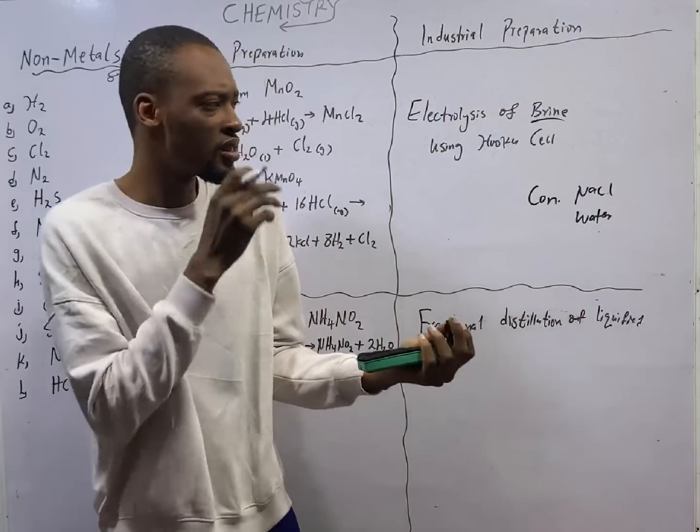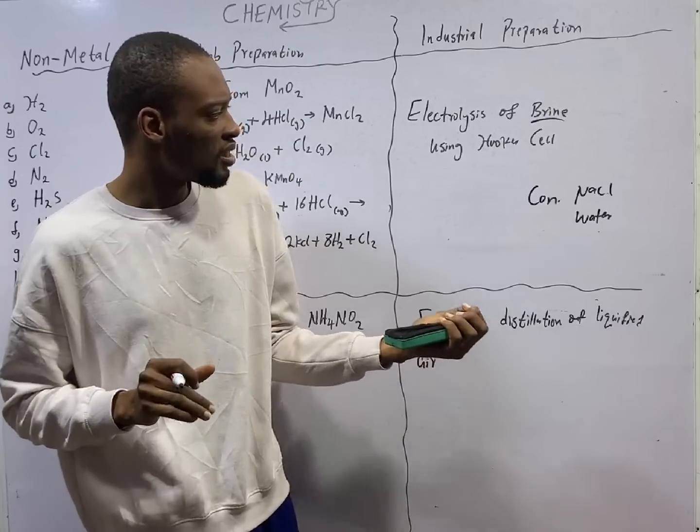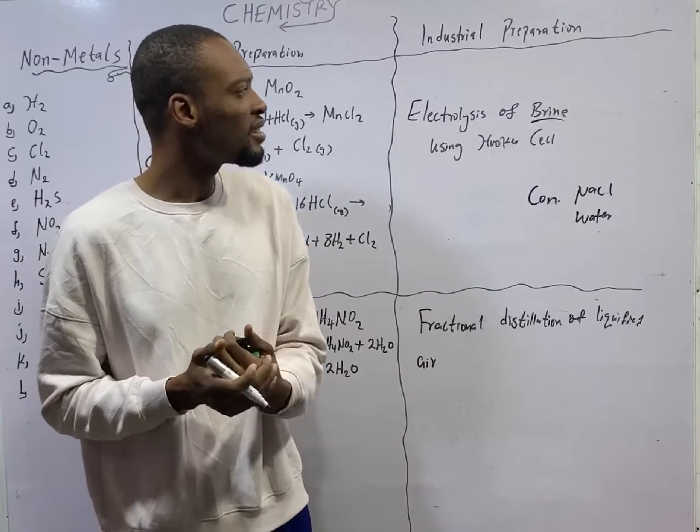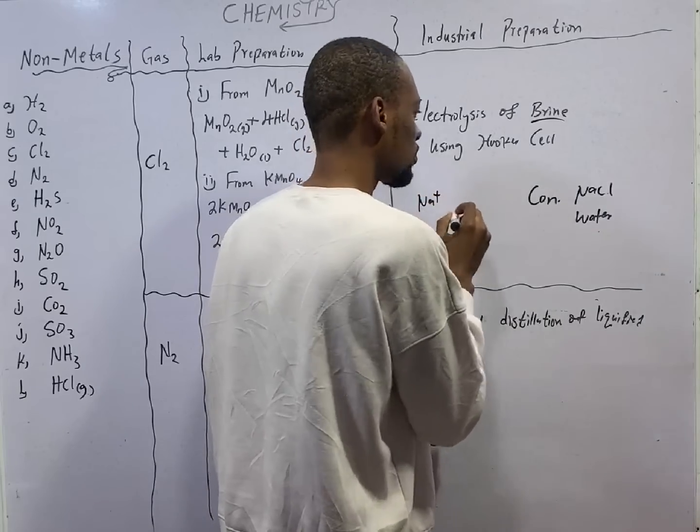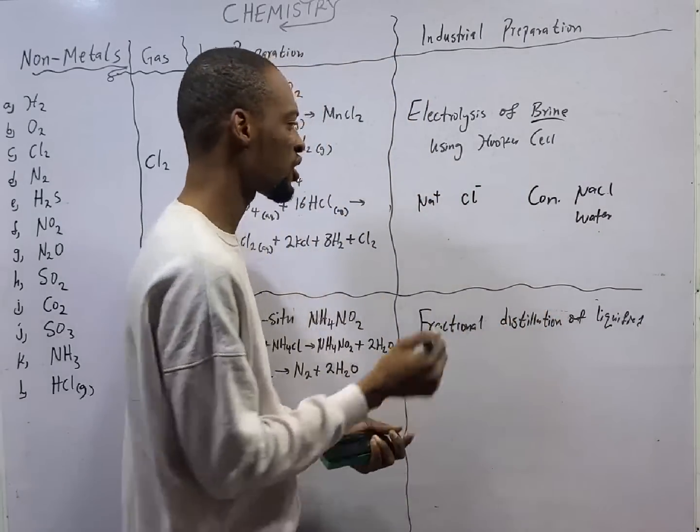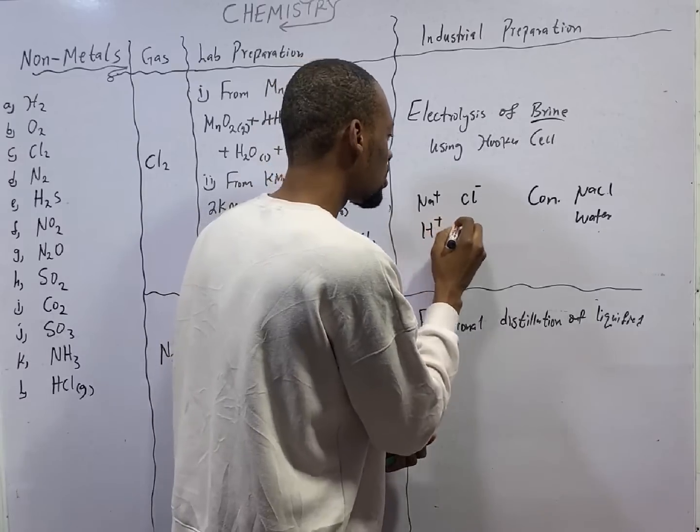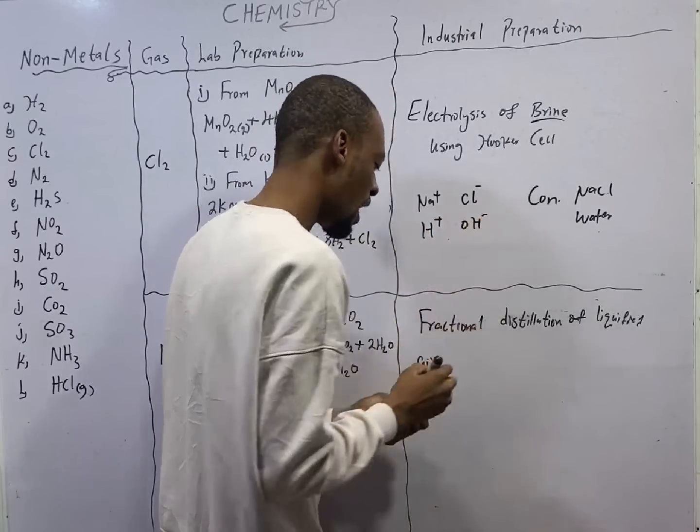If you have something like this, we know that the ions present in brine are sodium ion, chloride ion, and from water of course, hydrogen ion and hydroxide ion.